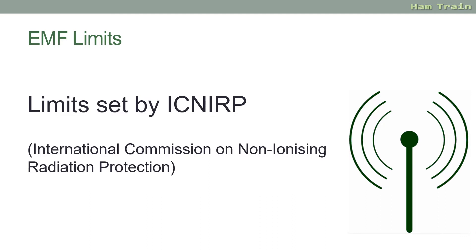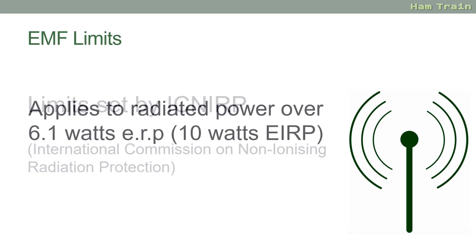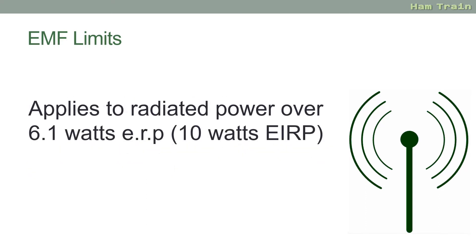ICNIRP sets international limits about RF exposure. The changes to the Ofcom license apply to radiated power over 6.1 watts ERP or 10 watts EIRP. Of course, these rules don't just apply to radio amateurs — they apply to all users of the radio spectrum, whether that's mobile phone masts, broadcasters, taxi companies, or whoever. Anyone going over 6.1 watts ERP would need to comply.